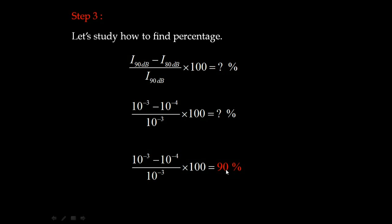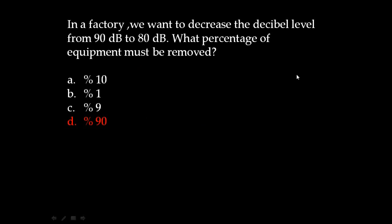This means 90 dB of sound is 90% greater than 80 dB of sound. The answer is D: 90%. If you like the video, subscribe and leave comments to see solutions to other problems. Bye!